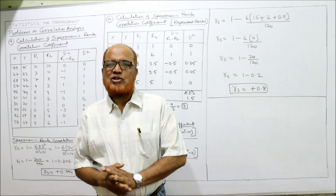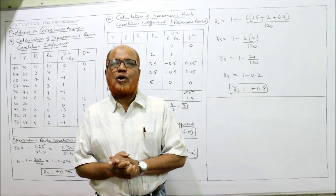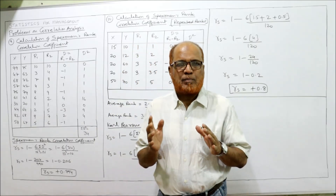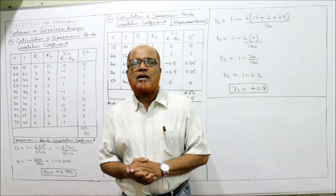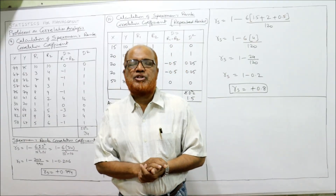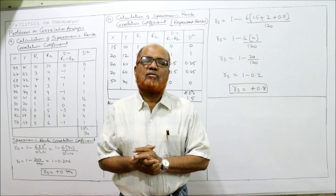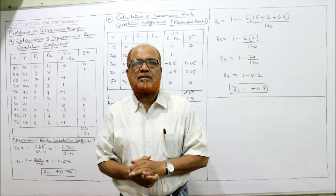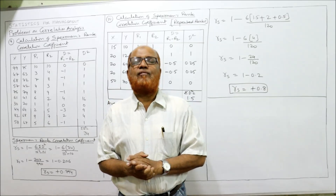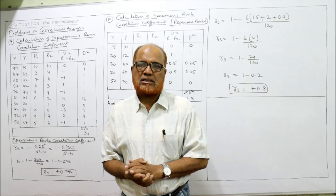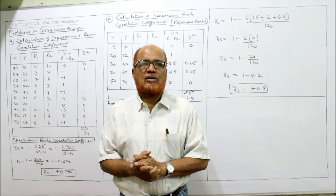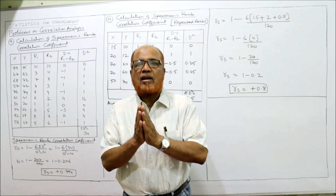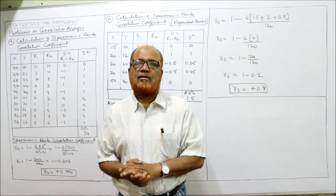Hello viewers, welcome to my channel. I'm Hashem Ali Khan. This is the last and final video on correlation analysis. I'm going to explain the eighth and ninth problems. The last video covered Spearman's rank correlation coefficient, which is applied whenever data is qualitative in nature. There are two types of problems in rank correlation: first where ranks are given, and second where ranks are not given.